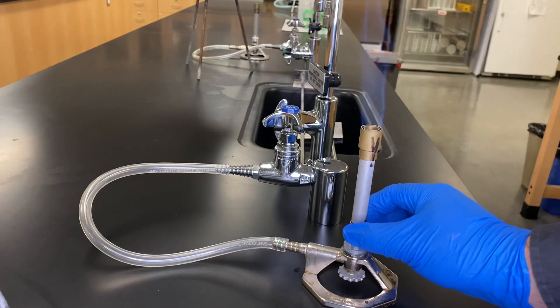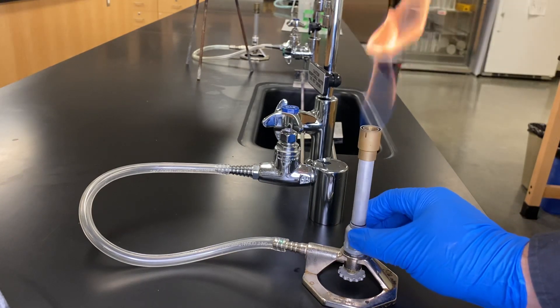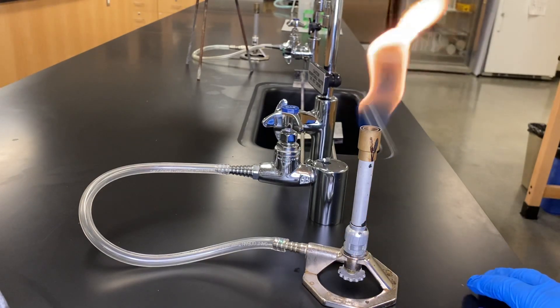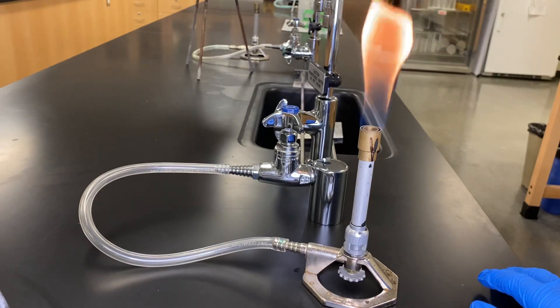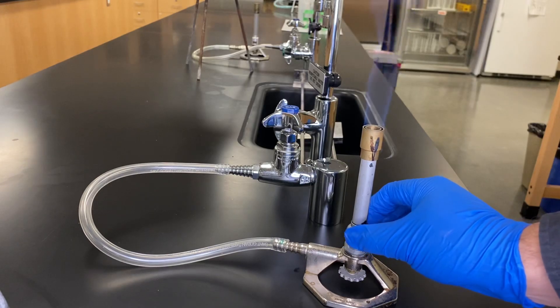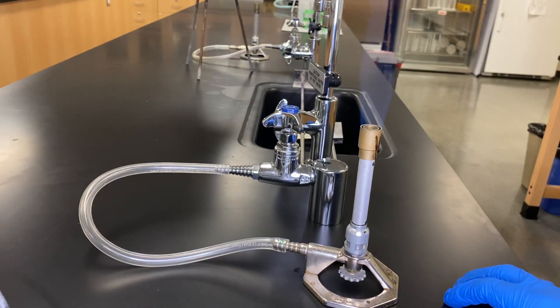And then if we close it even further, it'll turn into your classic orange-yellow flame, which is the coolest of the flames that we have, so lowest temperature. So when we're boiling things, we're going to want to have it at this kind of blue temperature kind of color.